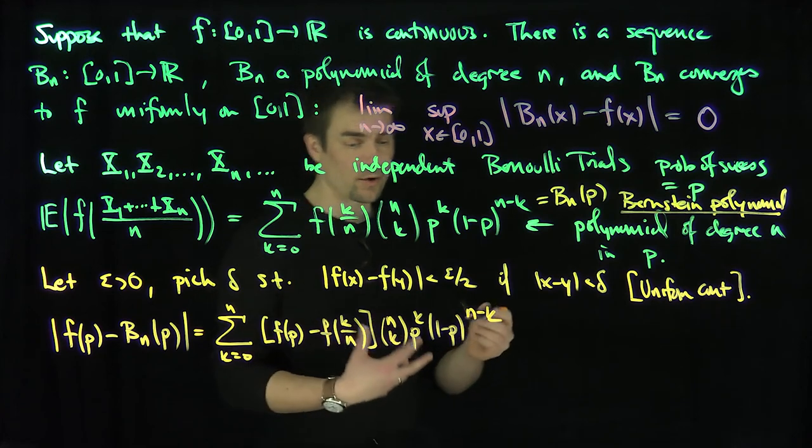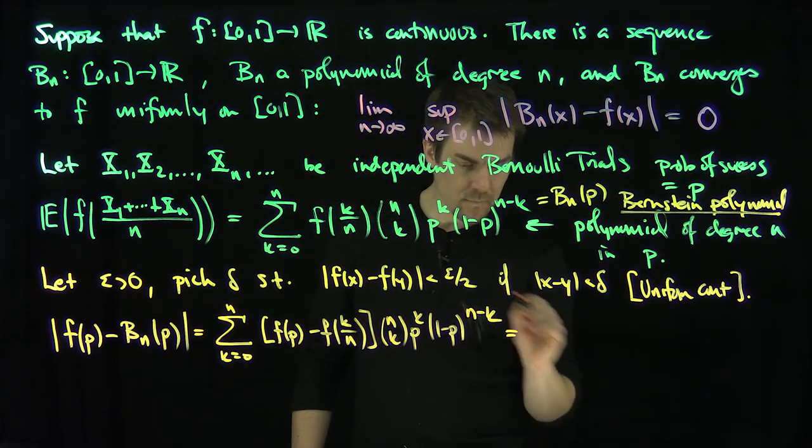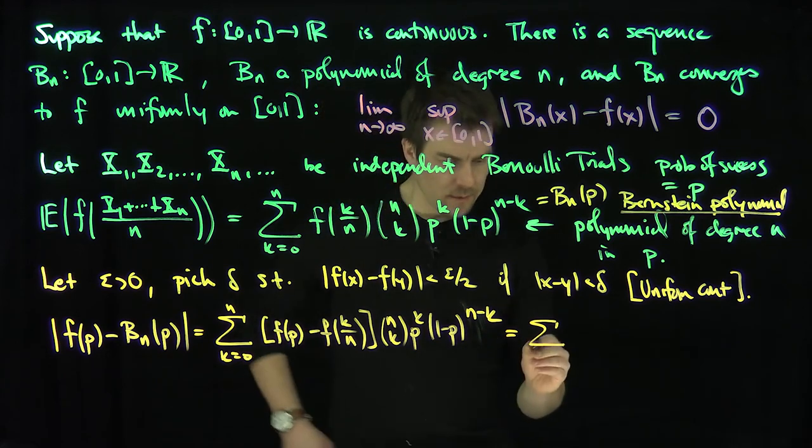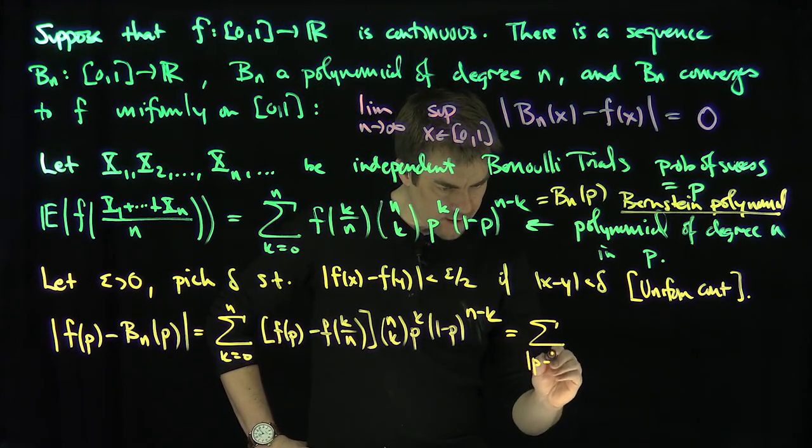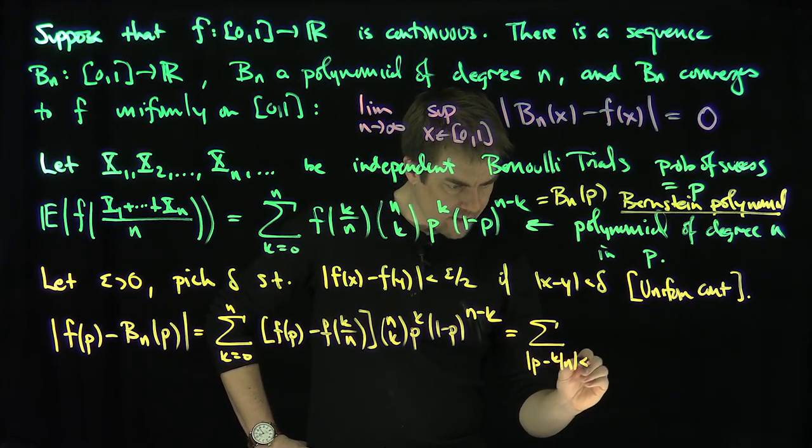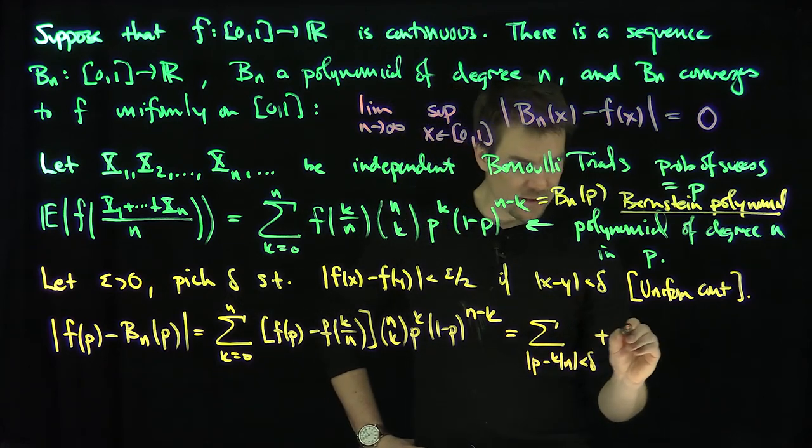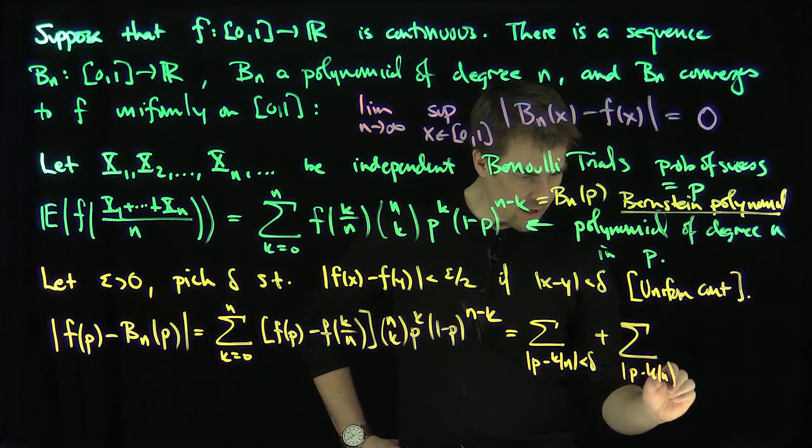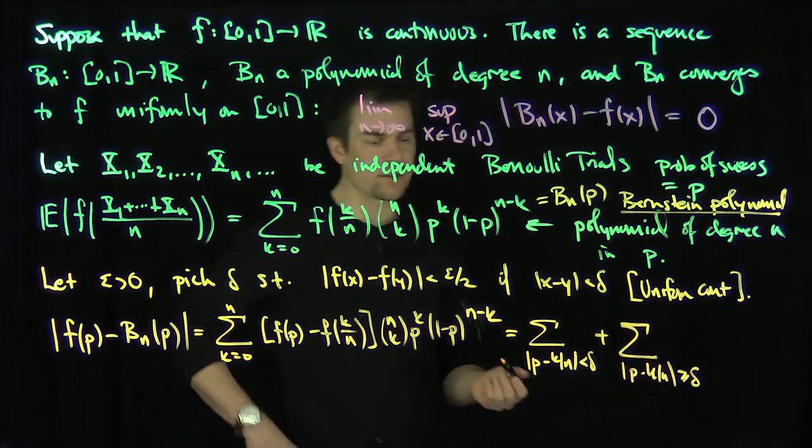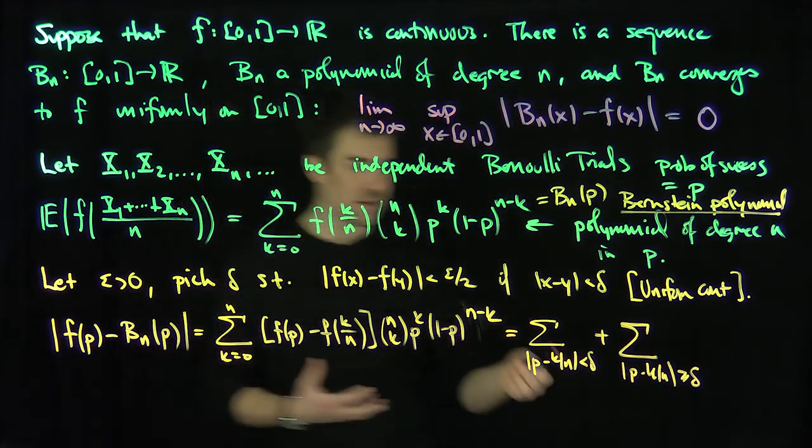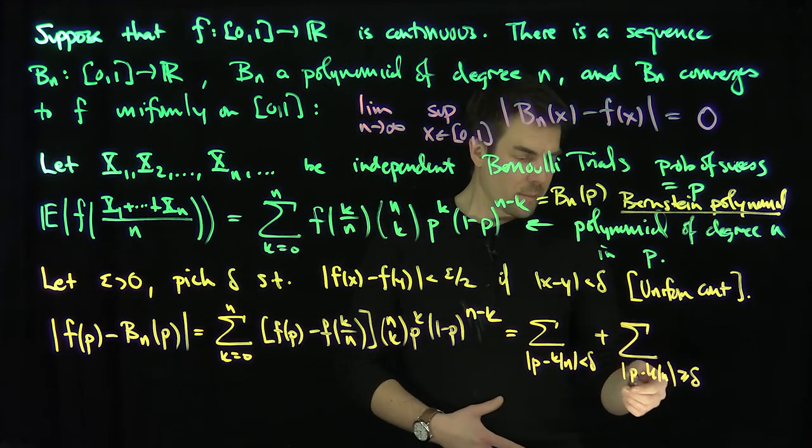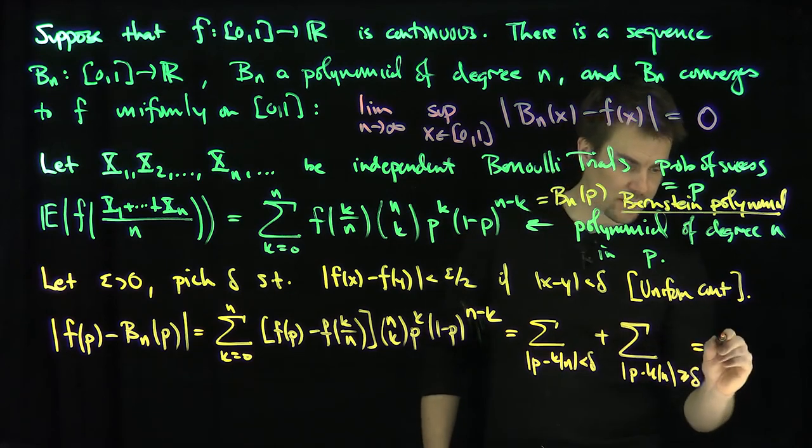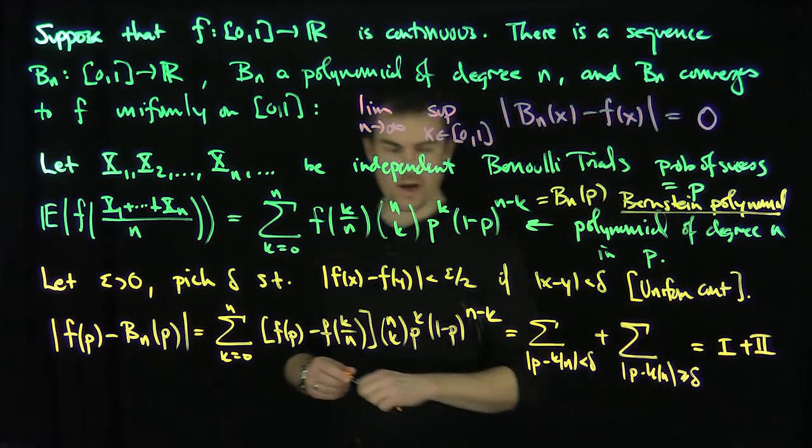Now I'm going to write this sum as two parts. I'm going to sum over |p - k/n| less than delta, and then I'm going to sum over |p - k/n| bigger than or equal to delta. So there's two things that can happen. I'm going to call these things two sums, the first sum is I and the second sum is II.